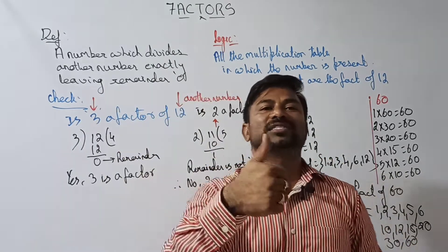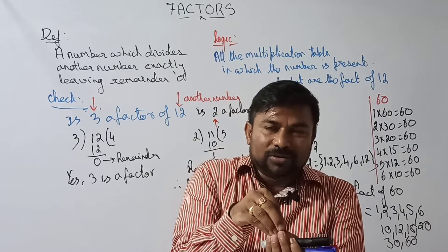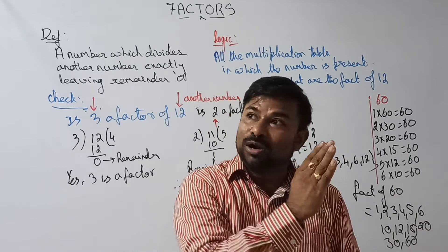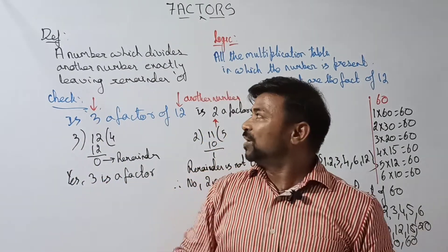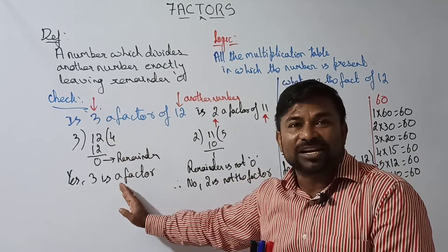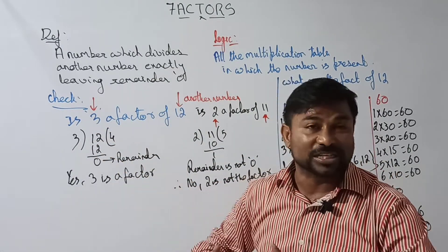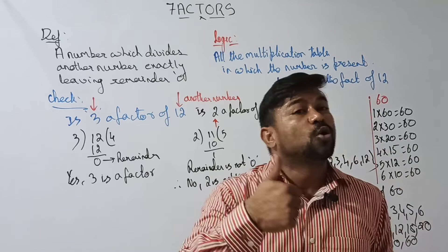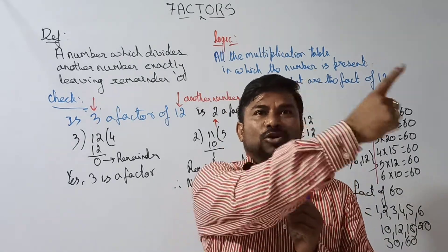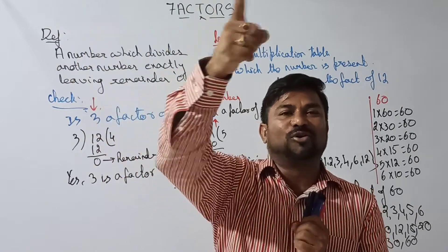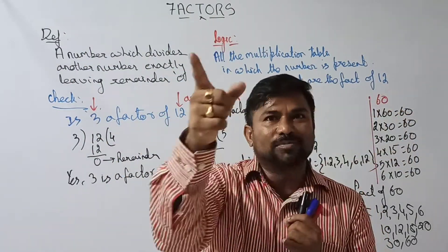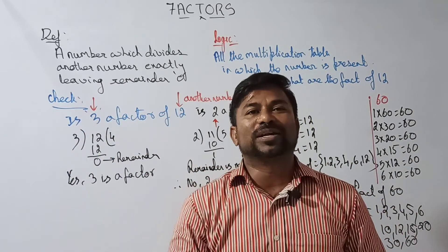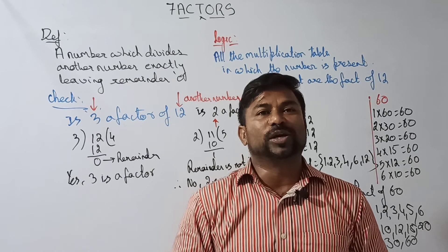Simple logic to find factors: start from small to large. Factors means a number which exactly divides another — when dividing, the remainder should be zero; otherwise it is not a factor. To find all factors, check all the multiplication tables in which the number is present. Those are your factors. Hope you are able to understand. See you in the next video — thank you.